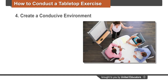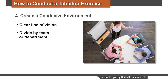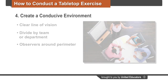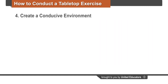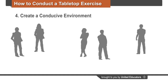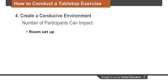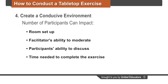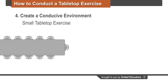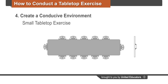Consider the environment and the time needed to conduct the tabletop exercise. Ensure that all participants can easily see each other, the facilitator, and any necessary materials. Divide the participants by team or department, and place any observers around the perimeter of the room. Depending on the goals of the exercise, the number of participants can range from 5 to 25 or more. Think about how the group size will affect room setup, the facilitator's ability to moderate, and the time needed for discussion. For a smaller tabletop exercise, a large conference table and chairs should be sufficient.